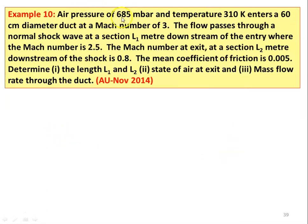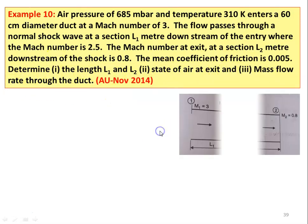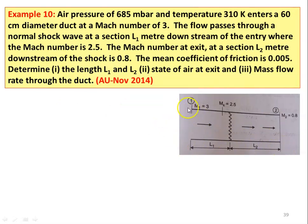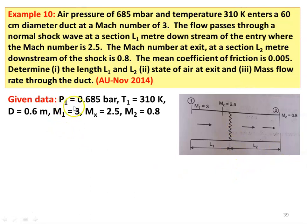Example 10: Air at 685 mbar and 310 K enters a 60 cm diameter duct at Mach number 3. The flow passes through a normal shock wave at section L1 meters downstream where the Mach number is 2.5. The Mach number at exit, L2 meters downstream of the shock, is 0.8. Mean coefficient of friction is 0.005. Determine L1 and L2, state of air at the exit, and mass flow rate through the duct. (From November 2014 question paper.) This is Fanno flow — a constant area duct with friction — and the shock occurs within the Fanno flow.